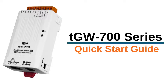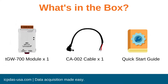This is the quick start guide for ICP-DAS USA's TGW-700 series. Included in the box is your TGW-700 module, a CA-002 cable, and a quick start guide.